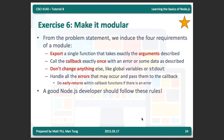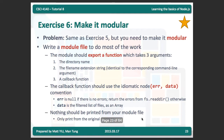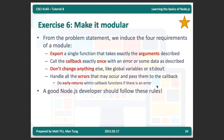There are several requirements for writing a Node.js module. First, export a single function that takes exactly the described arguments. Second, call your callback function exactly once when your module finishes its task. Third, do not change anything else — only do your work inside the module. You cannot access global variables or write to standard out or standard error. Finally, you need to handle all errors and pass them to the callback function via the error argument. If there are any errors, do an early return. A good Node.js developer should follow these rules.